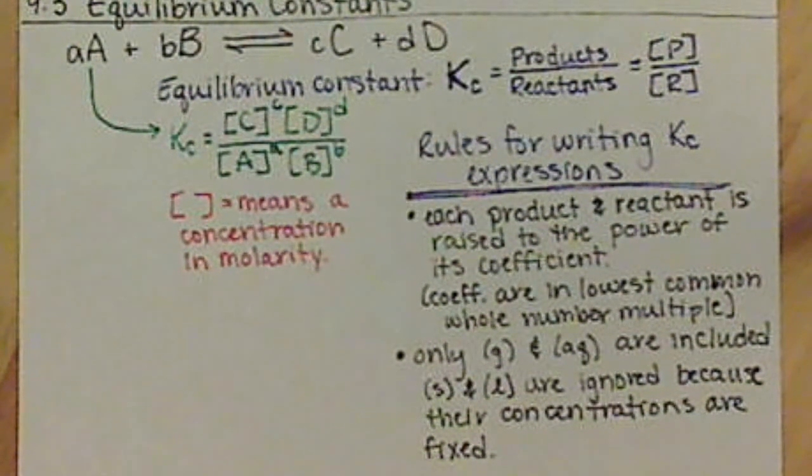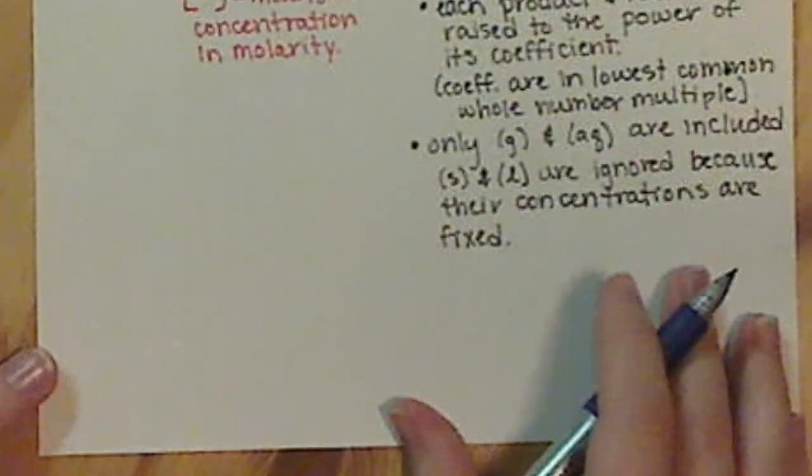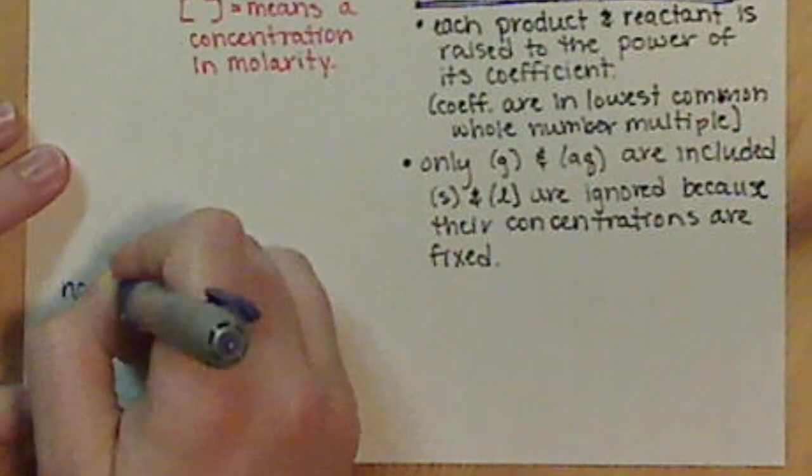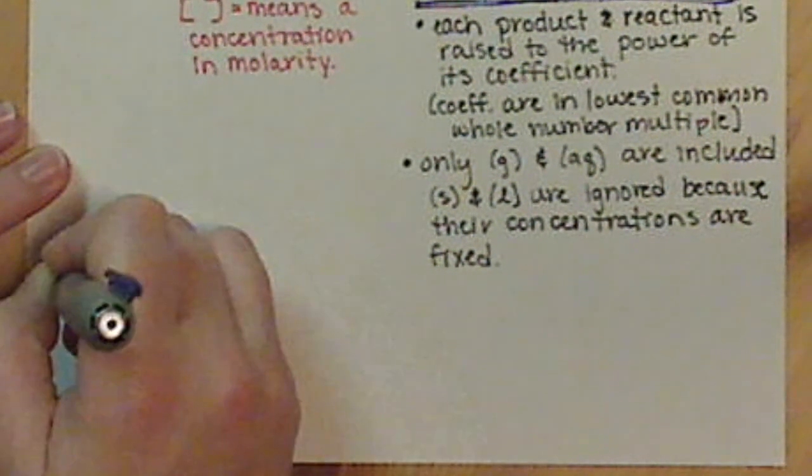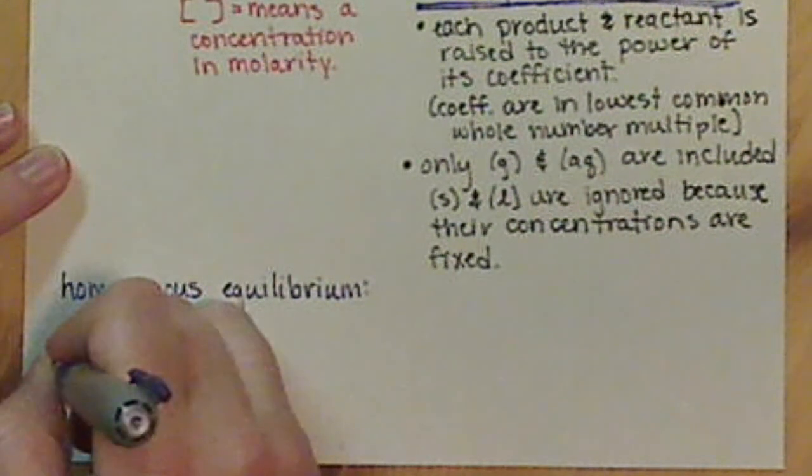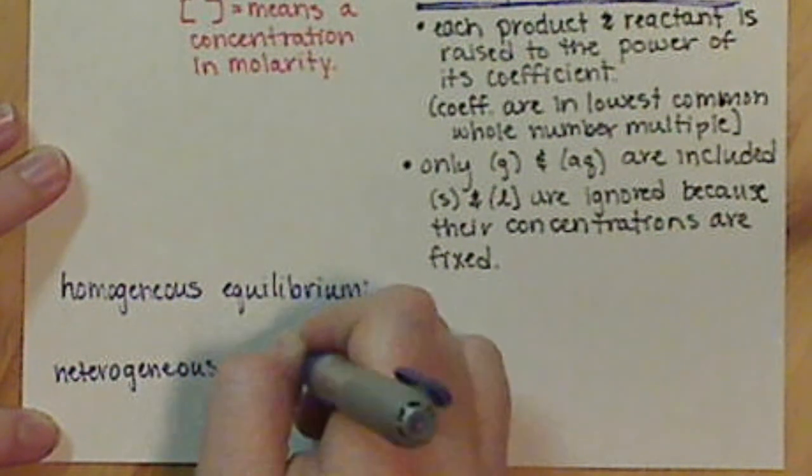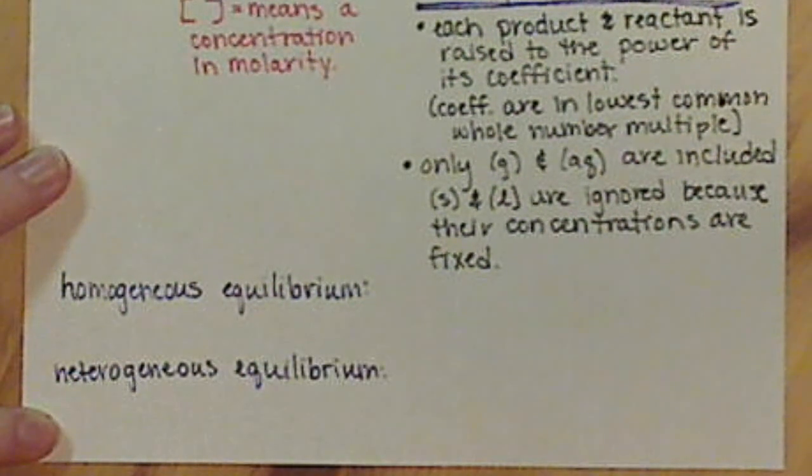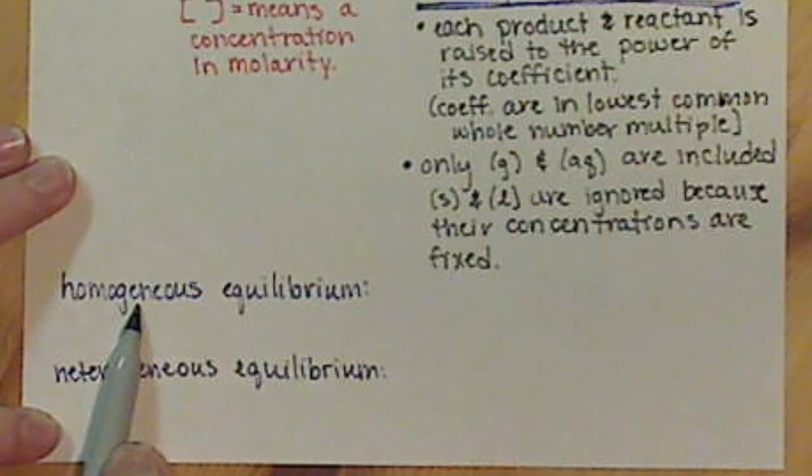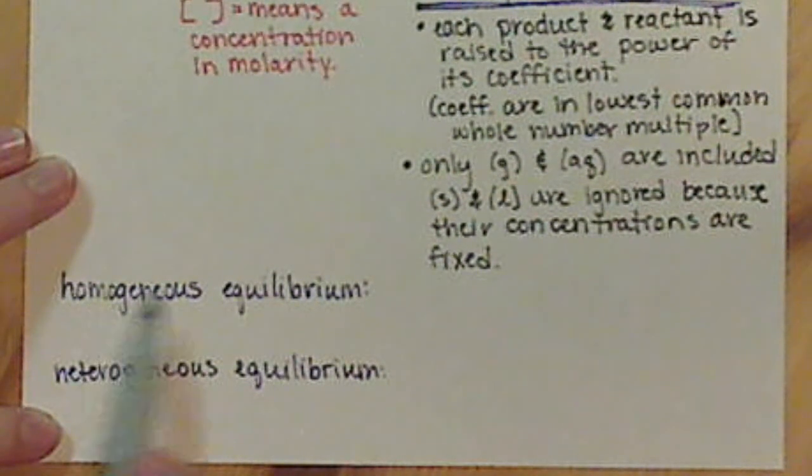Let's get some more vocabulary. We have two different types of equilibrium that we can see. We have a homogeneous equilibrium and a heterogeneous equilibrium. A homogeneous equilibrium, this is an equilibrium that's going to be the same throughout. And when we're talking about the same throughout, we are referring to the phase. So all of the phases of the reactants and the products will be the same for a homogeneous equilibrium.